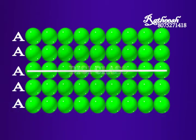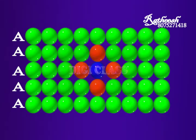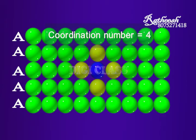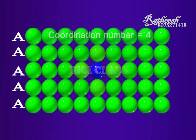Notice that the centers of all the spheres are in a straight line. Each sphere is in contact with four of its neighbors and hence the coordination number is four.